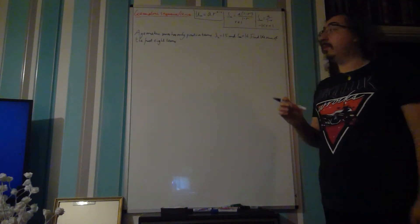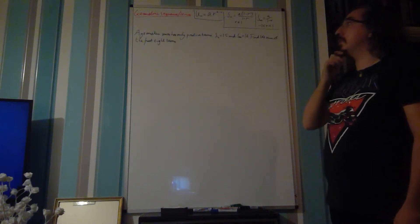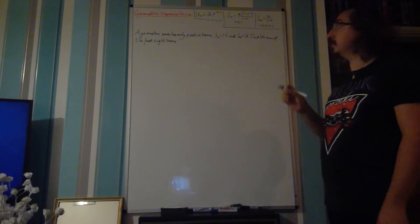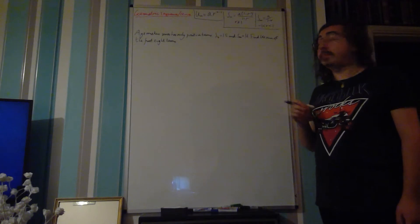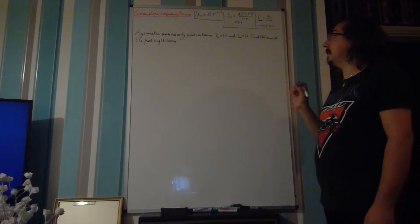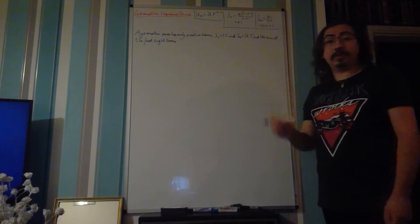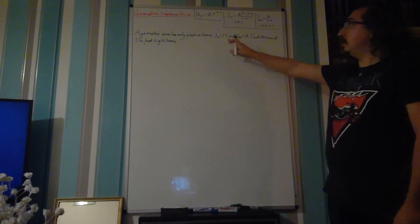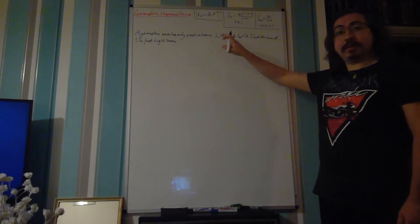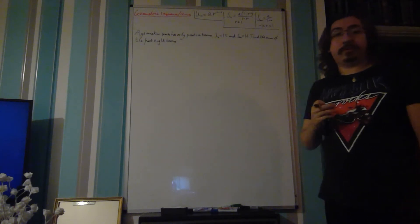In this video we're given the problem: a geometric series has only positive terms, the sum of the first four terms is equal to 15, and the sum to infinity is equal to 16. Find the sum of the first eight terms. Let's look at our two key pieces of information.